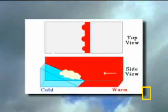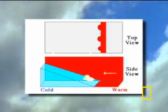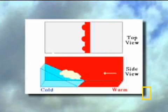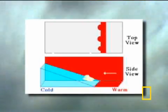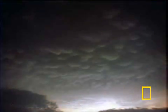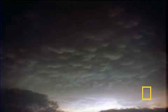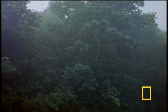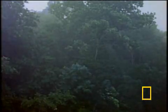Warm fronts occur when a warm air mass slopes over a cold air mass, pushing it along. Weather effects are usually less dramatic during warm fronts. It often gets hotter and muggier, and there's a good chance that showers and thunderstorms may occur.